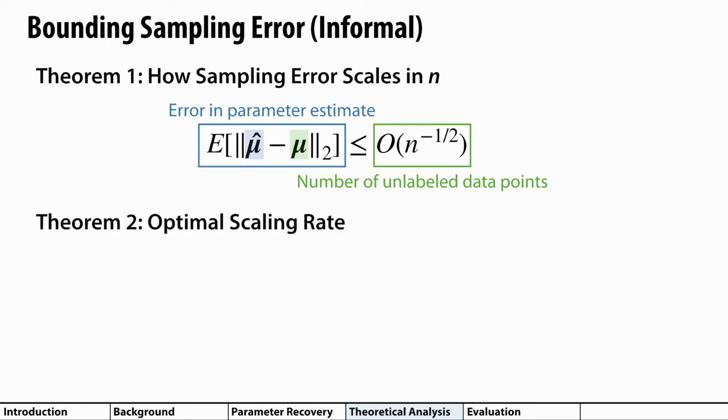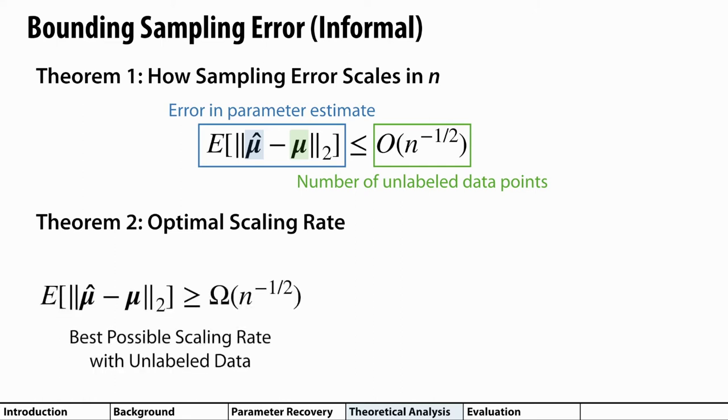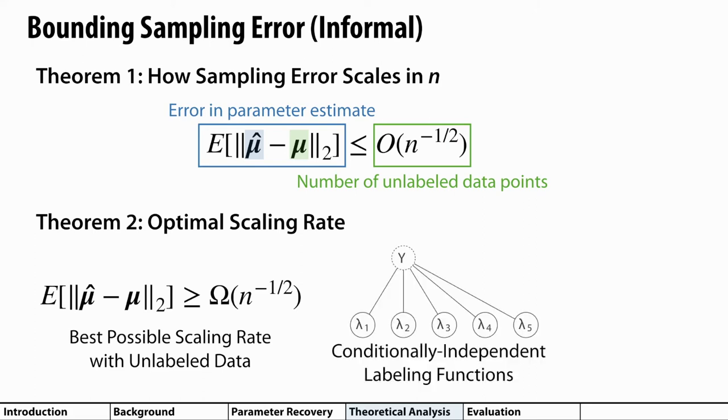The cool thing here is that this rate is actually optimal up to constant factors in some cases. In particular, theorem two in our paper says that the best possible scaling rate with unlabeled data is also the inverse of the square root of the number of unlabeled data points. Furthermore, in the case where all our labeling functions are conditionally independent, and here's an example of a dependency structure where this is the case, we can show that this bound is tight both in n and the number of labeling functions. And as you can see, the lower bound from theorem two matches the upper bound in theorem one, which tells us that our algorithm is optimal up to constant factors.